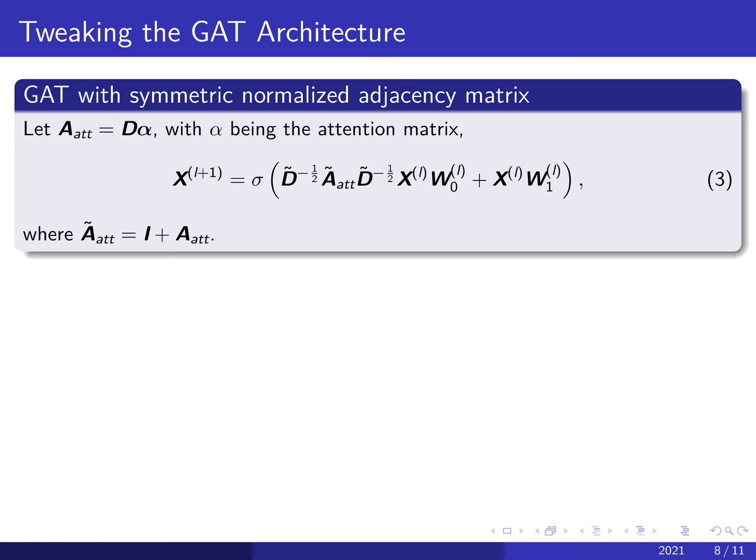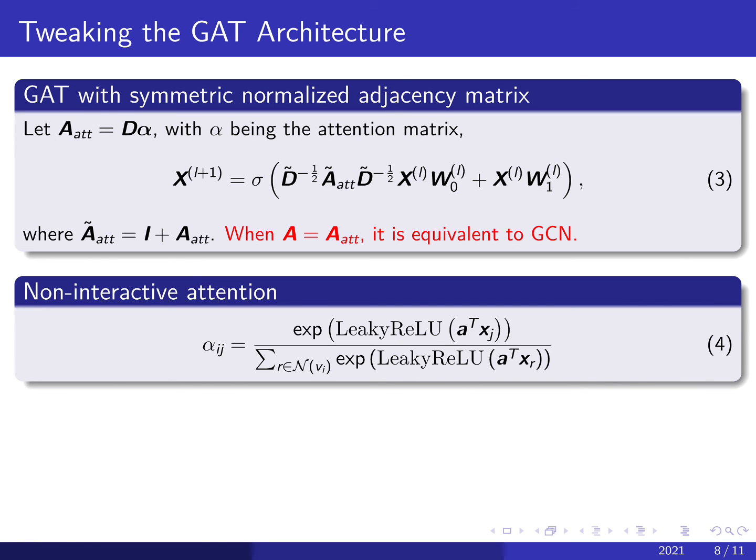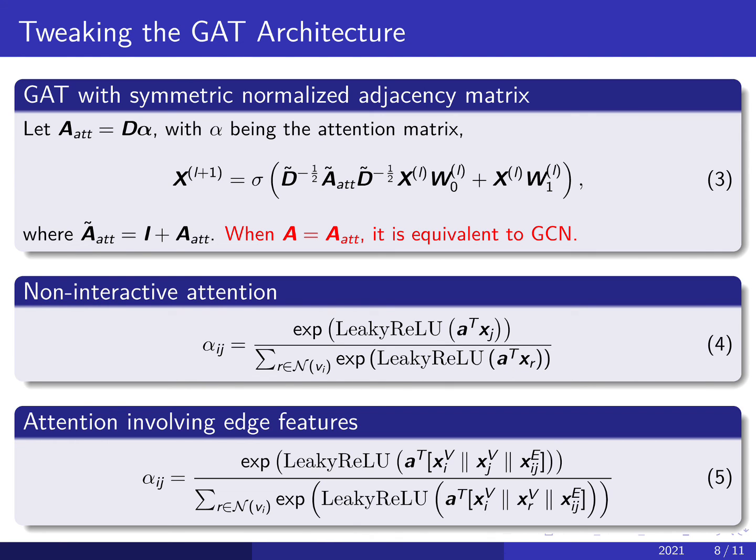Finally, we propose several variants of graph attention networks. First, we observe that the symmetric normalized adjacency used by GCN is crucial sometimes. So, we propose the GAT with symmetric normalized adjacency as here. In this way, we make GCN a special case of GAT when the attention values are equal for all neighbors. And we then propose non-interactive attention mechanisms and attention involving edge features. Each of these variants has a practical use in different scenarios.